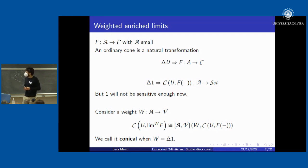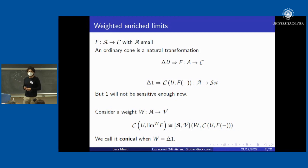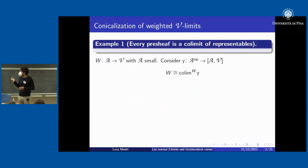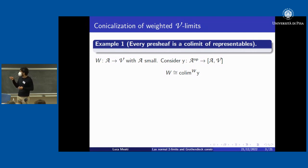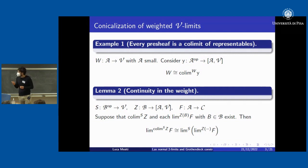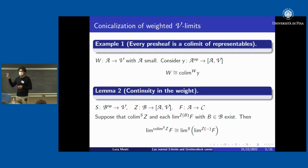We pay attention to when the weight W is delta-one, in which case we call the limit conical. The question is: in the 2-categorical case, is every weighted limit conicalizable, and under which enrichment bases is this true? A very important example justifying weighted limits is that every copresheaf is a colimit of representables, achieved as a colimit of the unit embedding weighted by the copresheaf itself.